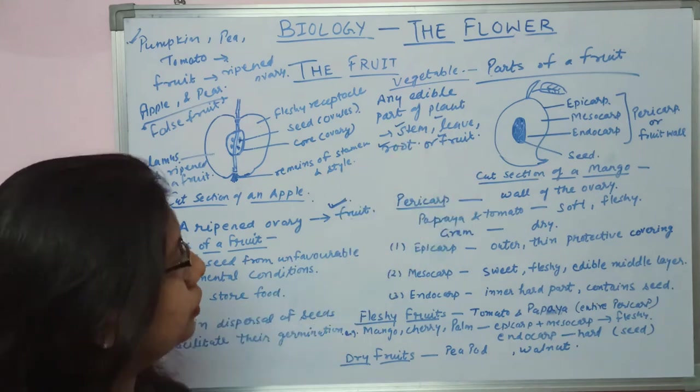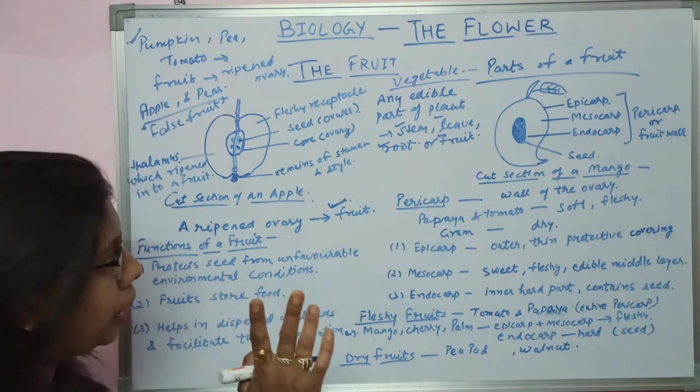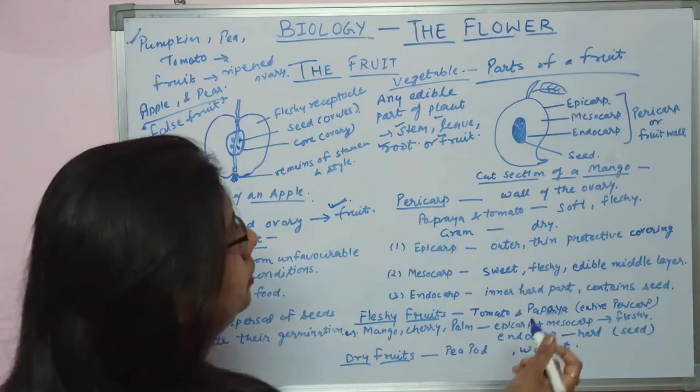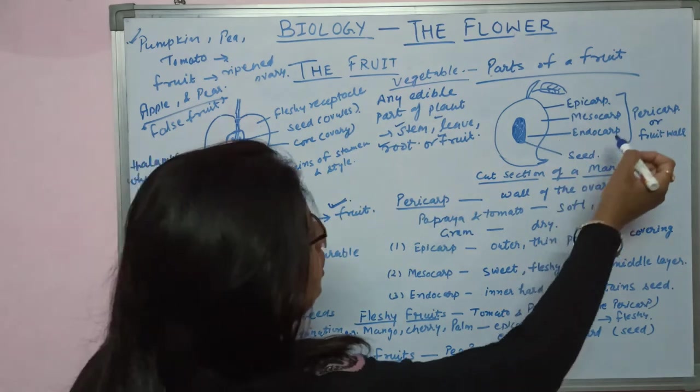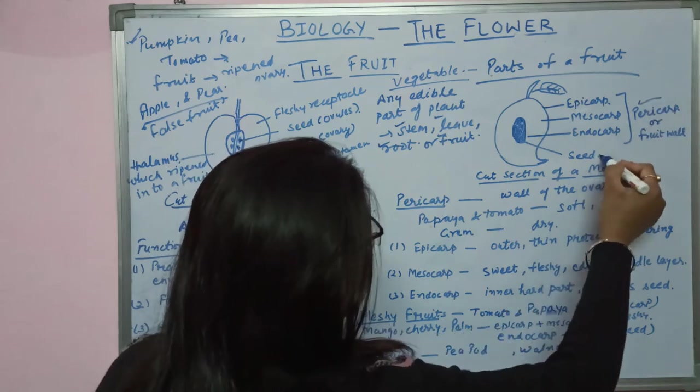Parts of a fruit: basically there are two parts of a fruit. The first one is the pericarp and the other one is the seed.